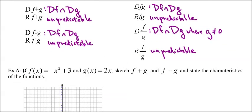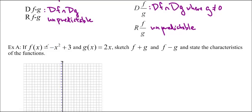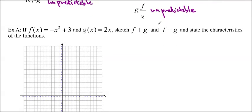Let's do some examples. Example A, if f of x equals negative x squared plus 3 and g of x equals 2x, sketch f plus g and f minus g and state the characteristics of the functions. I'm actually only going to sketch f plus g just for time's sake. So f of x, the domain of f of x is x in R. And the domain of g of x is also x in R.